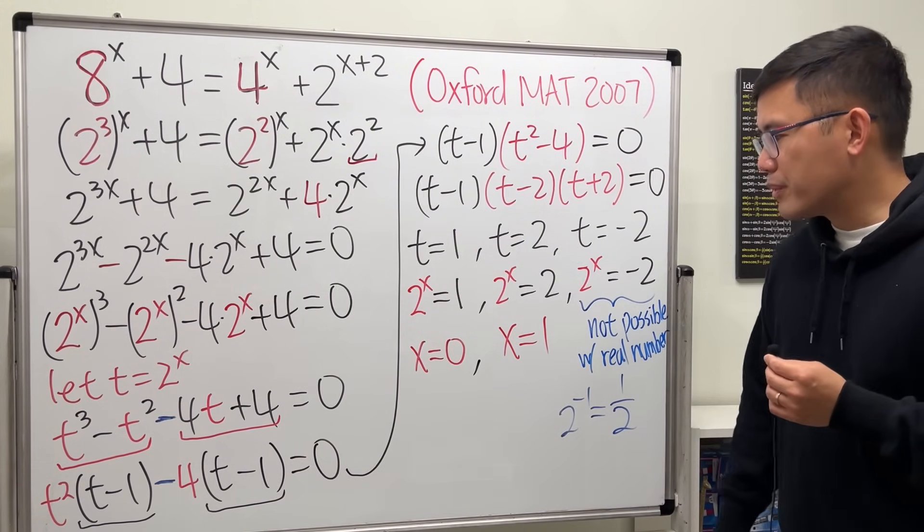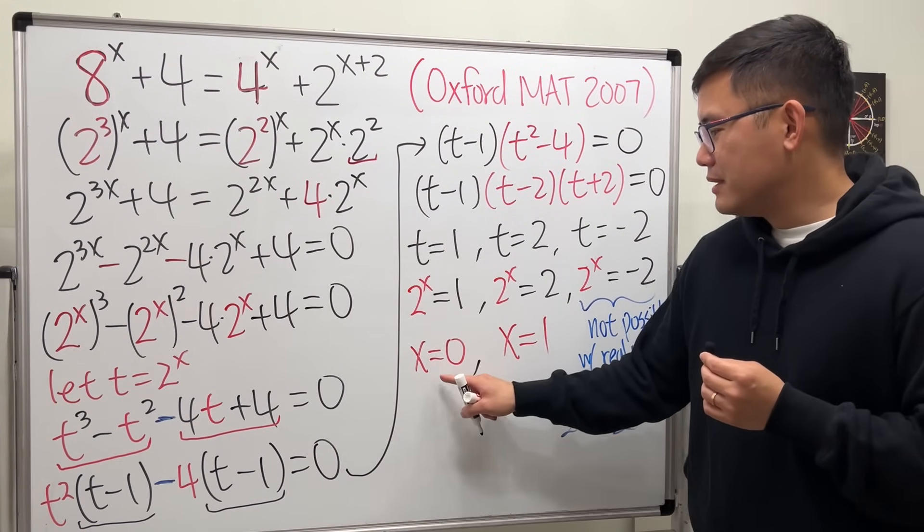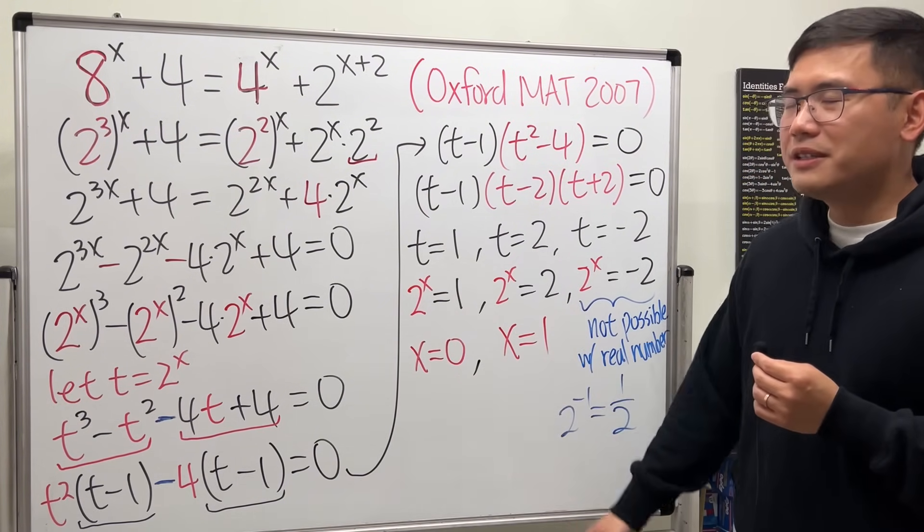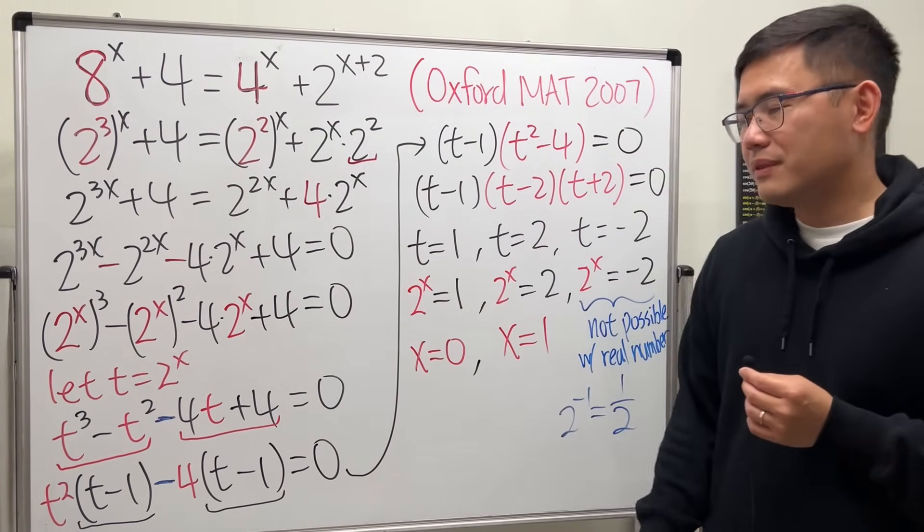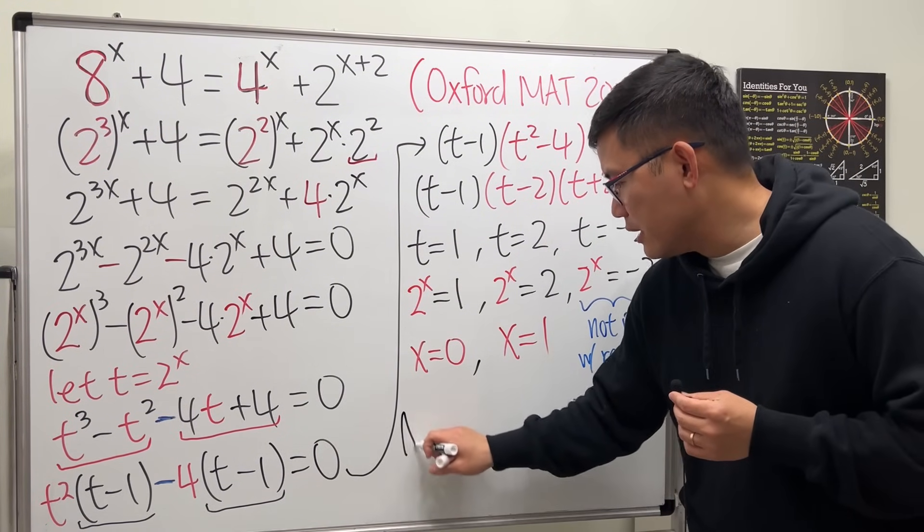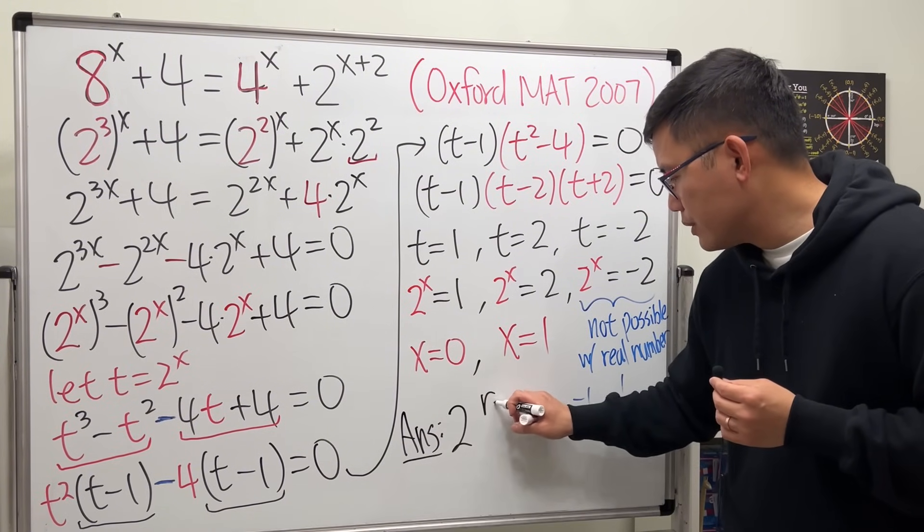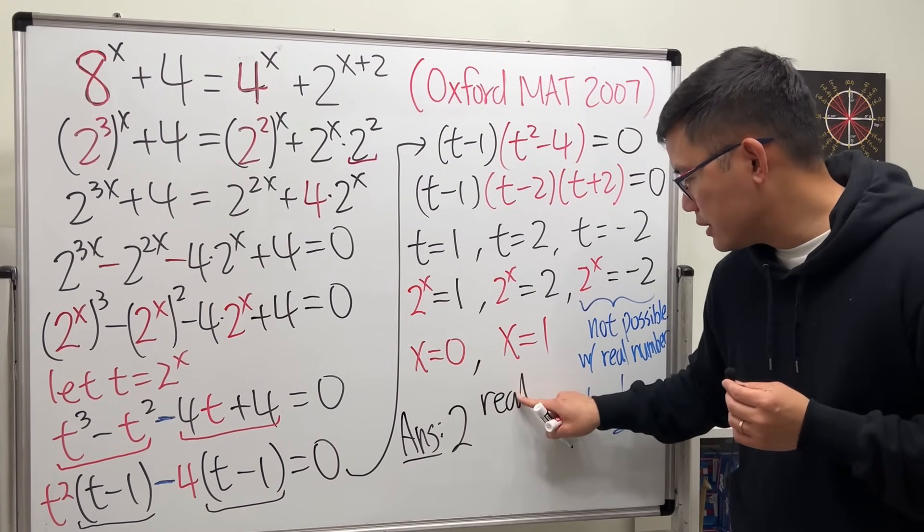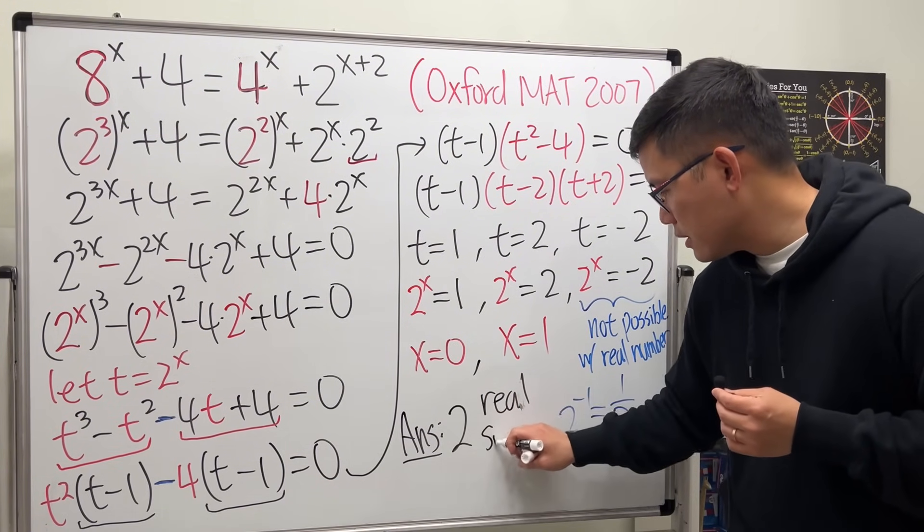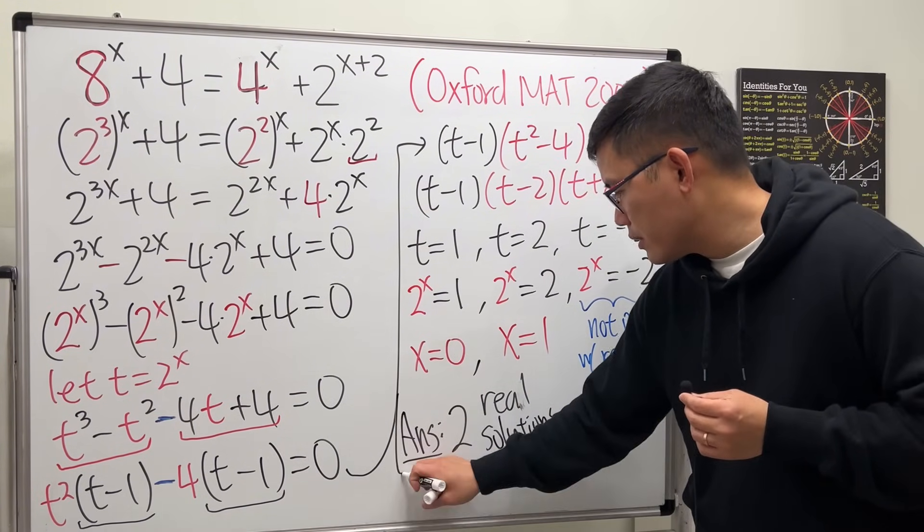You can do it with complex numbers, but we are not talking about that. So, we have 0 and 1 for the answers. So, how many solutions do we have? Technically, we have 2 solutions. Real solutions. So, the answer, we have 2 real solutions. That's it.